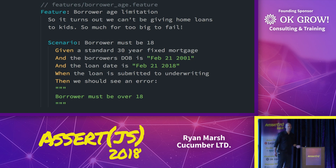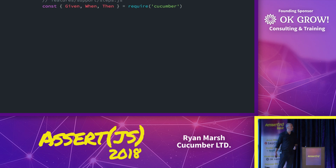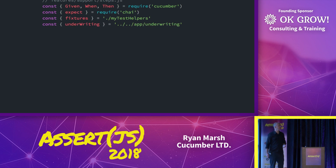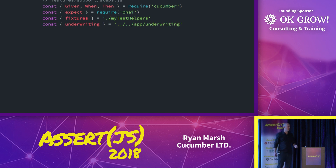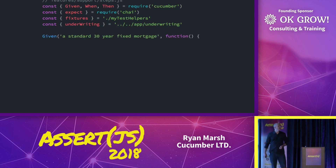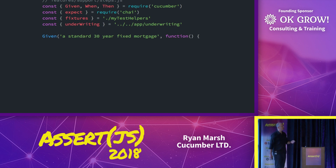So what does the code look like? We said we're going to take this natural language description and connect it to tests. We're going to start out and import given, when, and then from Cucumber, along with some other stuff to help our test run — expectations, maybe some fixtures, our app code. Then we have a function called 'given' — we're passing it a string and a function. That's the method signature.